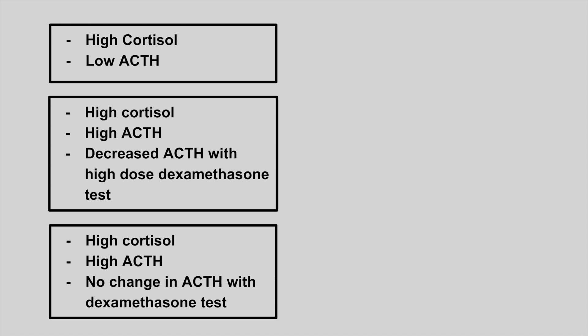The next patient has high cortisol and low ACTH. This is primary hyperadrenalism, also called Cushing's syndrome.